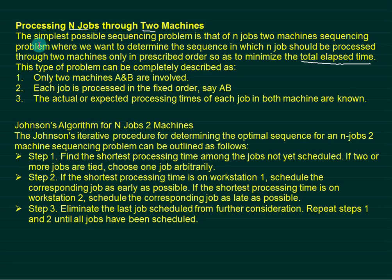The simplest algorithm is given by Johnson for n jobs on two machines. The algorithm says: first find out the shortest processing time among all jobs. If two or more jobs are tied, choose one arbitrarily. Step two: if the shortest processing time is on workstation one, schedule the corresponding job as early as possible. If the shortest processing time is on workstation two, schedule the corresponding job as late as possible.